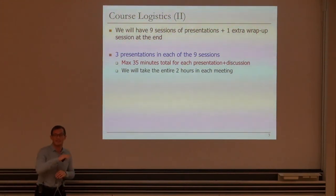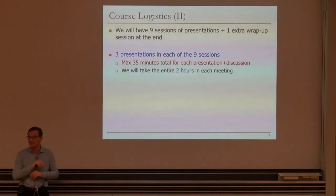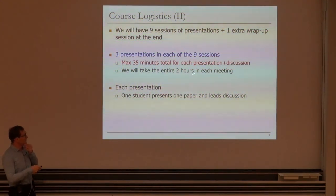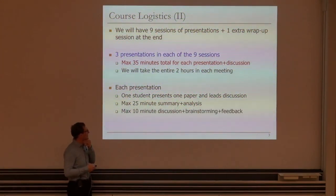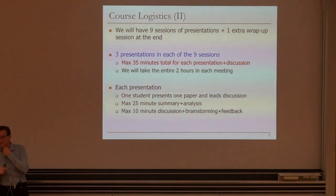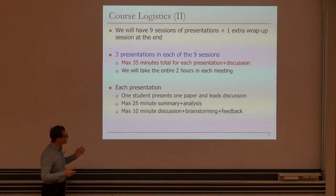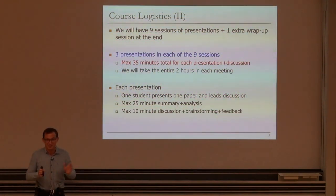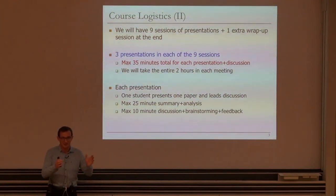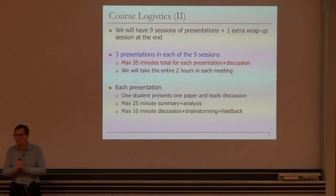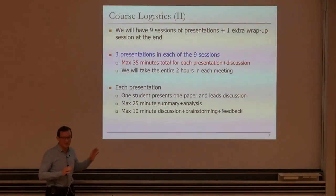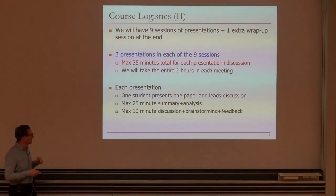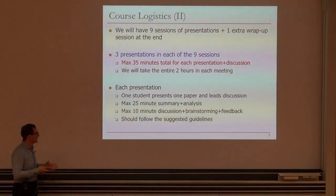You can go out without disrupting the class, especially at the end of one presentation and beginning of another. Just make sure it's not your presentation when you do that. Each presentation: one student presents one paper and leads the discussion. Maximum 25 minutes for summary and analysis, and maximum 10 minutes for discussion, brainstorming, and feedback. If you can do a good summary in 20 minutes, that's better. We're going to run a very tight ship. It should follow the suggested guidelines — I'll give you more examples of those today.